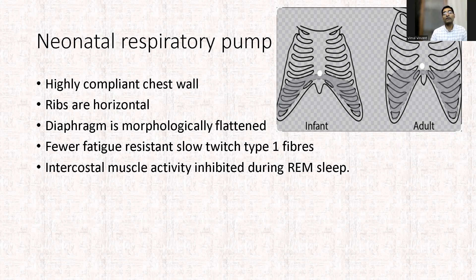In adults, the diaphragm acts as a piston, but in infants it acts as a bellows, so it is less effective. There are also fewer fatigue-resistant type 1 fibers, so the diaphragm gets fatigued earlier. As a result, when there is respiratory distress, these babies can go into respiratory failure. Intercostal muscle activity is inhibited during REM sleep, so these muscles are not able to stabilize the ribcage during REM sleep. Preterm and term babies spend a considerable amount of time in REM sleep, making neonatal ventilation less effective compared to adult ventilation.